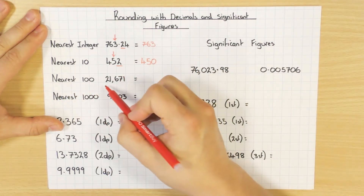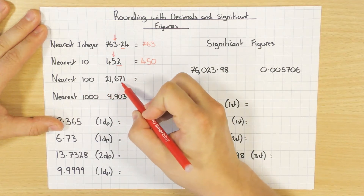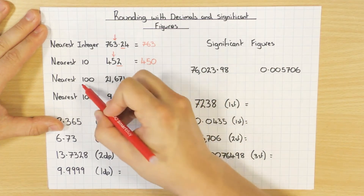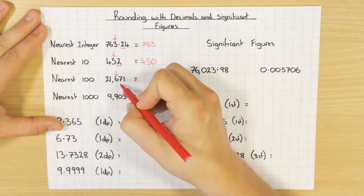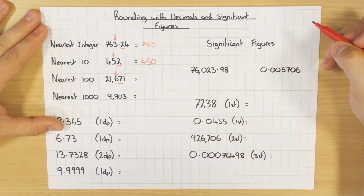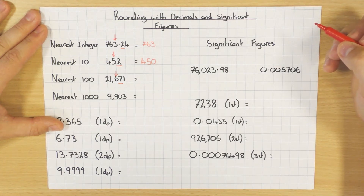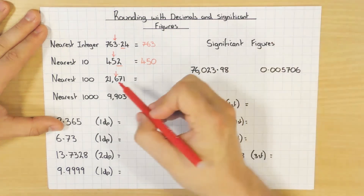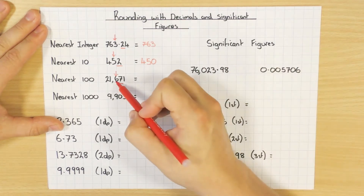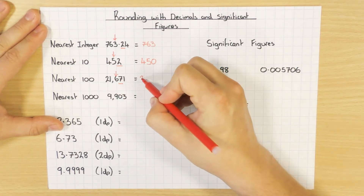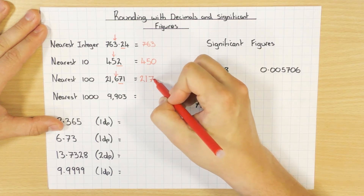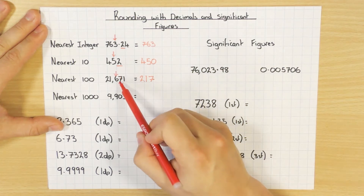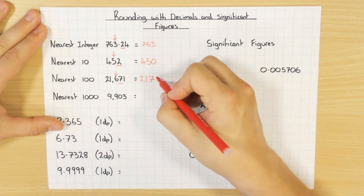Rounding 21,671 to the nearest hundred: I look at the hundreds column, which is the six, then look at the next digit — it's a seven. Seven is five or more, so I round up, meaning I add one to the six. Six becomes seven, giving 21,700. Because I rounded the hundreds column I need to add two zeros at the end.